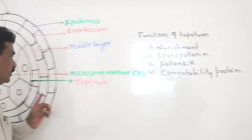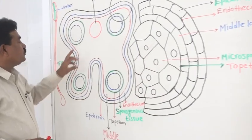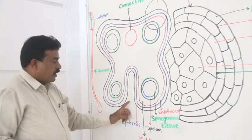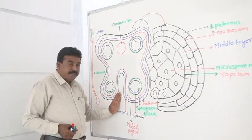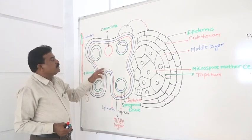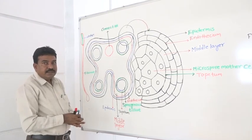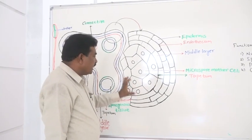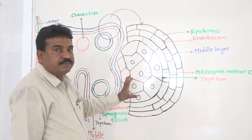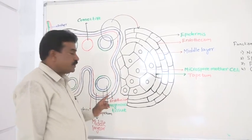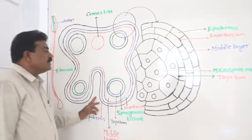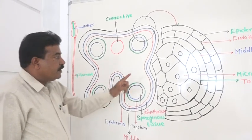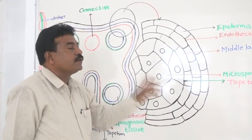If you consider the diagram of the anther, you have to draw the complete diagram, which can be a 3-marks sketch-and-label question. Otherwise, it can be a 5-marks question with explanation. If you take a single corner of the anther, it is a diagram of the microsporangium. Therefore, you can get questions like: sketch and label TS of anther, or sketch and label TS of microsporangium.